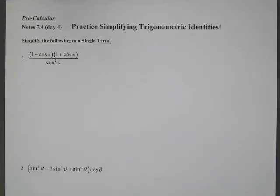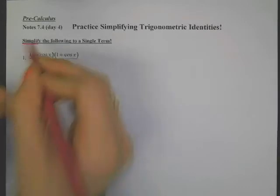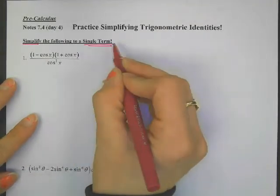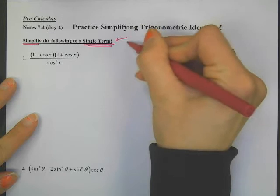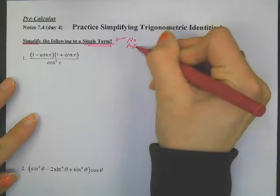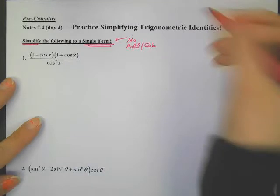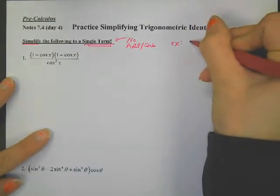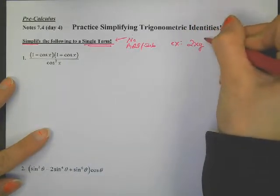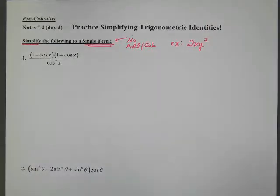And we have ourselves at day four of simplifying trigonometric identities. None of the examples today in the notes have answers, so they're all going to be simplified. And all of them are going to simplify to a single term. So what that means is no adding or subtracting. We have to have single terms. For example, you could have something like 2xy squared. That is a single term, but you can't have plus or minus, then you get two terms.